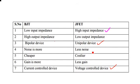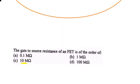All these seven points are very important for the SSC electrical exam from the Field Effect Transistor topic. Now see the objective questions based on this. The first question: the gate-to-source resistance of FET is of the order of — high input impedance — so the answer is 100 mega ohms.